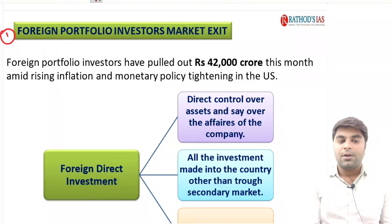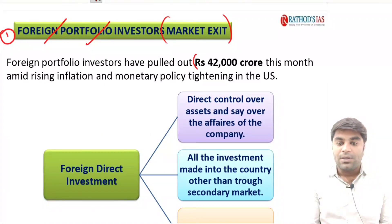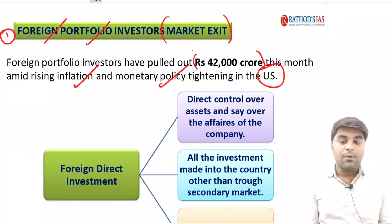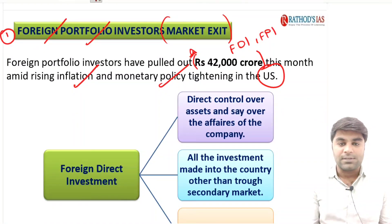The first topic we are going to discuss today is the foreign portfolio investors market exit. Foreign portfolio investors have pulled out rupees 42,000 crores this month amid rising inflation and monetary policy tightening in the US. So in this context, first we need to know the difference between foreign direct investments and foreign portfolio investments.